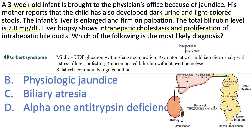We're left with biliary atresia or alpha-1 antitrypsin deficiency. The infant's liver is enlarged and firm on palpation — both are liver diseases. The total bilirubin level is 7, which is too high past the stage of physiologic jaundice. Liver biopsy shows intrahepatic cholestasis and proliferation of intrahepatic bile ducts — this is a giveaway that it's biliary atresia, not alpha-1 antitrypsin deficiency, which shows intracytoplasmic eosinophilic inclusions of the misfolded enzyme.